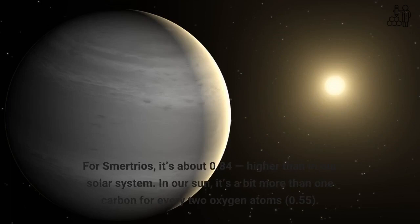For Smertrios, it's about 0.84, higher than in our solar system. In our sun, it's a bit more than one carbon for every two oxygen atoms, 0.55.